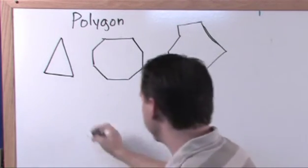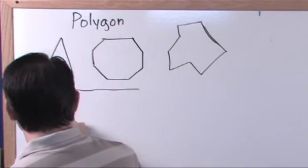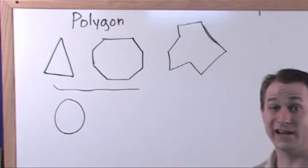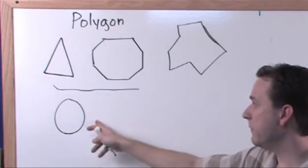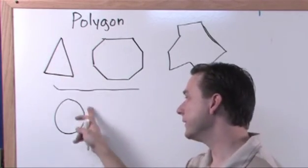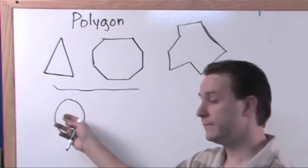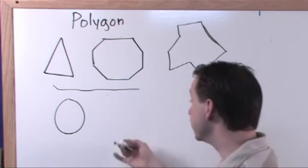So let's look at some examples of what is not a polygon. That's a circle. That is not a polygon. Polygons have to be made of straight lines on the sides with no curves. That definitely doesn't fit, so it's not a polygon.